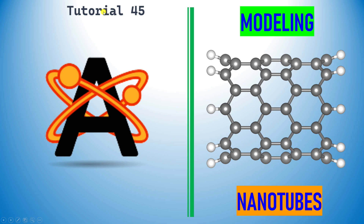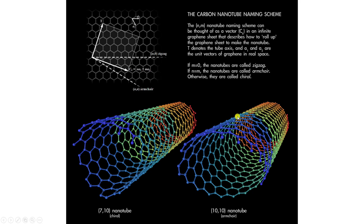Welcome to tutorial 45. In this tutorial you can learn how to build carbon nanotips using Avocado software. There are three types of nanotips: the first is zigzag nanotips, the second is armchair nanotips, and the third is chiral nanotips. If m equals zero the nanotips are called zigzag; if n equals m they are called armchair; otherwise they are called chiral nanotips.